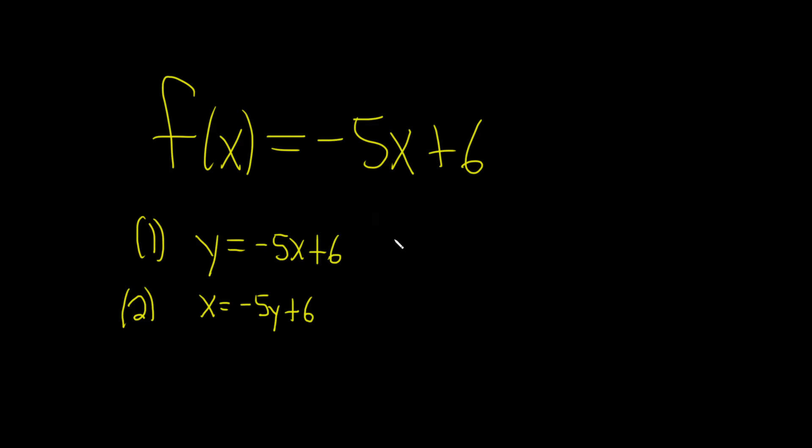And the third step is the hardest step. We actually have to solve for y. So to do that, we'll try to isolate this minus 5y term. So we'll start by subtracting 6 from both sides.